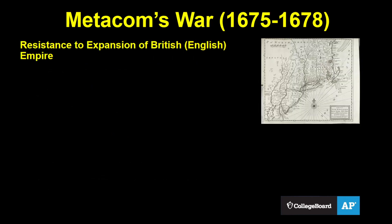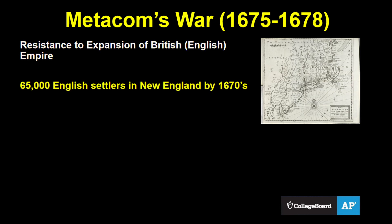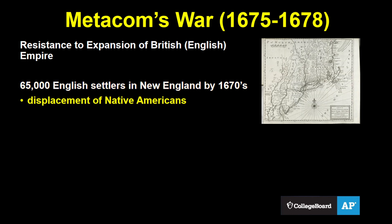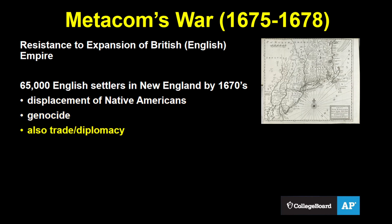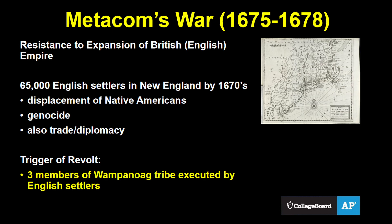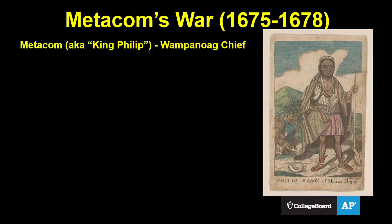While we're still in North America, let's talk about Metacom's War — another war by indigenous Americans against European expansion. By the 1670s, there were about 65,000 English settlers in New England, which had caused the displacement and at times genocide of many native inhabitants, although trade relations and diplomacy were also present. Diplomacy failed seriously in 1675 when leaders of the Plymouth Colony executed three members of the Wampanoag tribe of southern Massachusetts for the murder of another Wampanoag who was friendly with the English. The Wampanoag saw this as a violation of their sovereignty, and their leader, a chief named Metacom — also known as King Philip — launched what became the most devastating conflict in New England's colonial history.